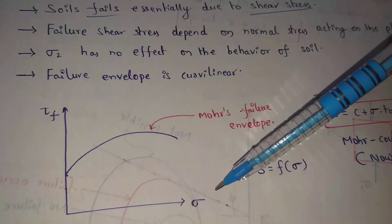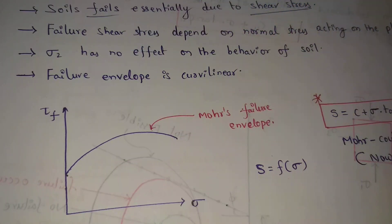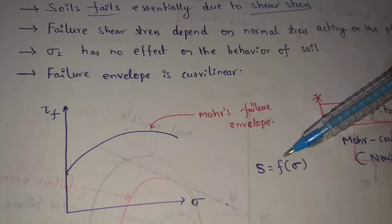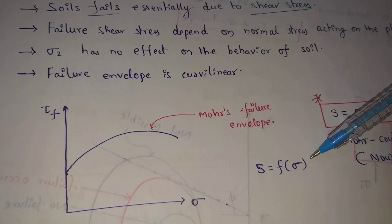This graph means sigma tau f. Sigma means normal stress, tf means failure shear stress. Okay, s equal to f into sigma.